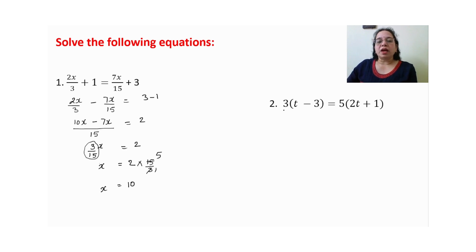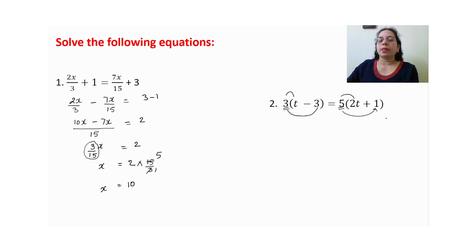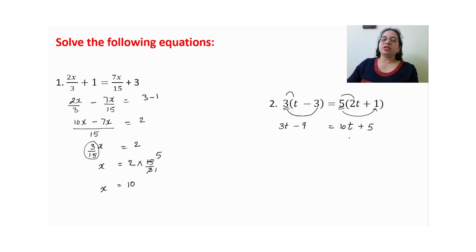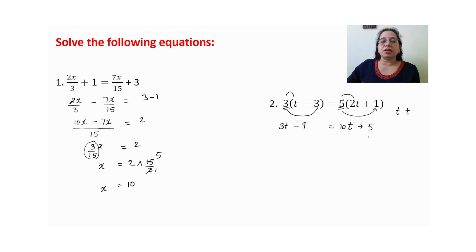Take one more example. यहाँ पर 3 और 5 आपस में cut नहीं होते हैं, इसलिए distributive property का use करेंगे। So: 3t minus 9 is equal to 5 into (2t plus 5) which gives 10t plus 25. Be careful when writing variable t — if written poorly, it can look like a plus sign.